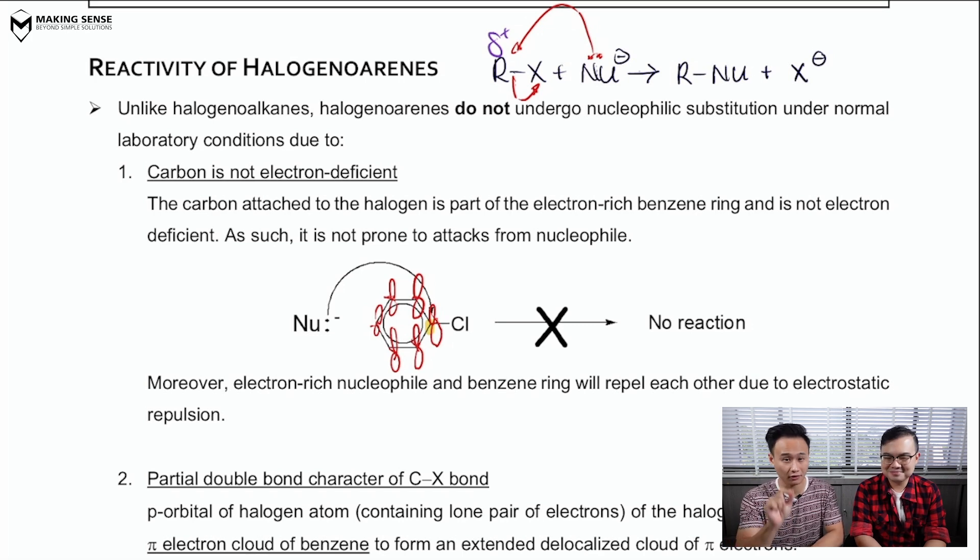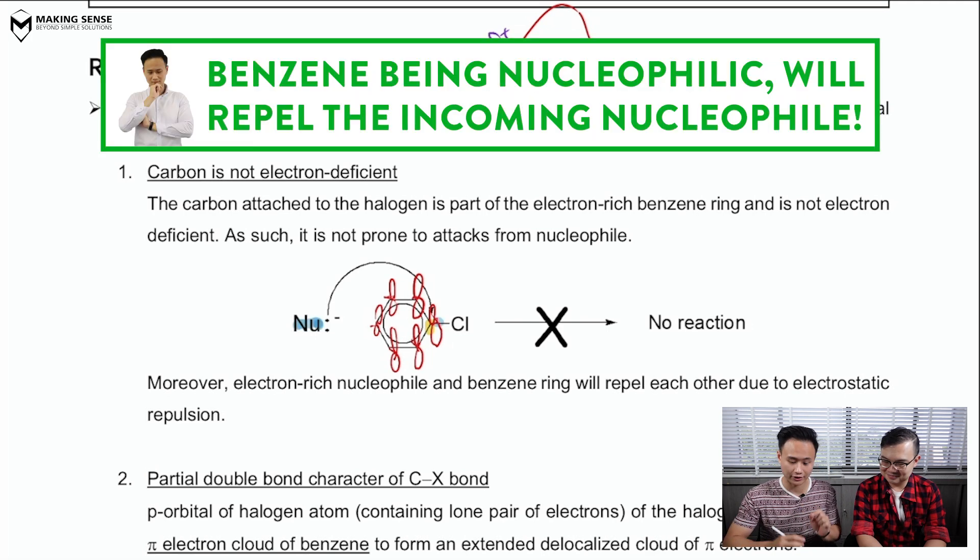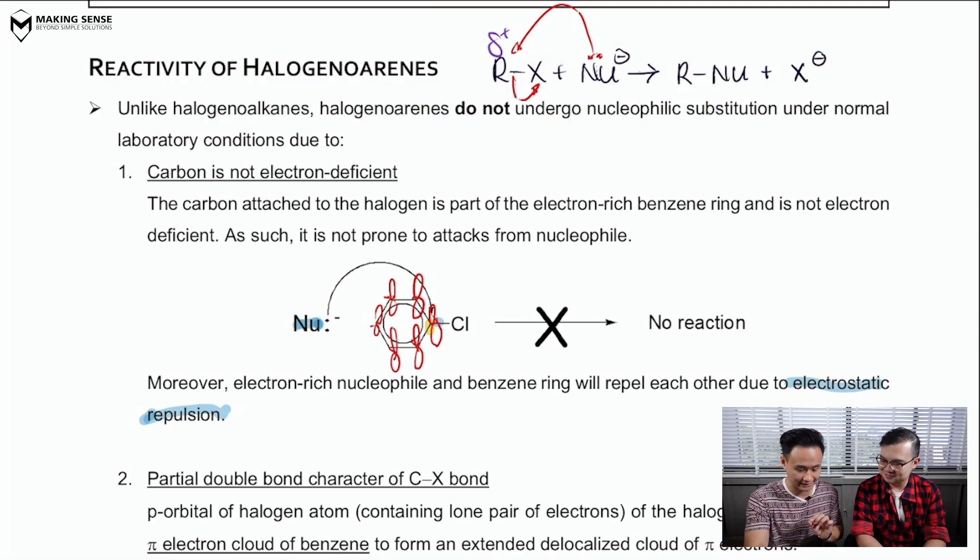So, the carbon attached to the Cl is not that electrophilic as you think. So, it's actually a nucleophile. And if a nucleophile tries to approach another nucleophile, you're going to get electrostatic repulsion. So, unlike the nucleophilic substitution you have seen in RX, you're not going to see the same nucleophilic substitution in halogenyl arenes.